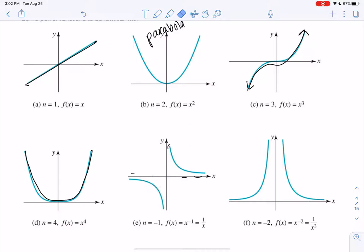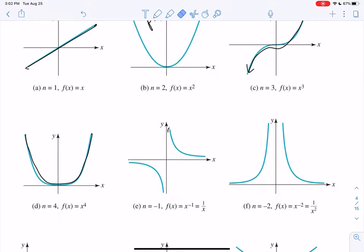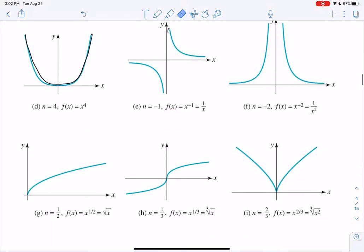We want to just be familiar with these. 1 over x squared kind of looks like 1 over x, but they're both positive y values. So the left and right are both positive. A square root function, I hope we've all seen that.